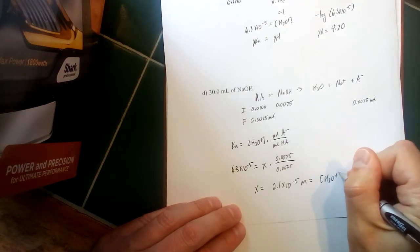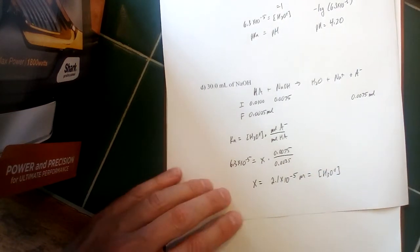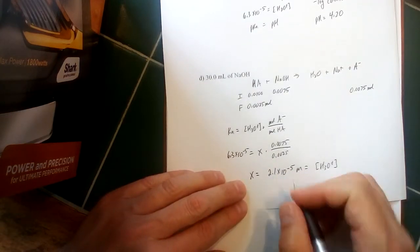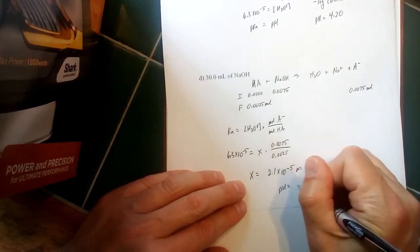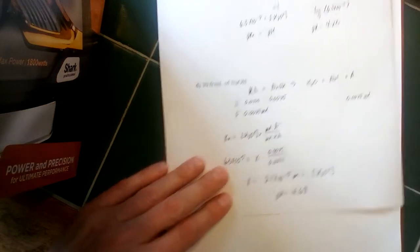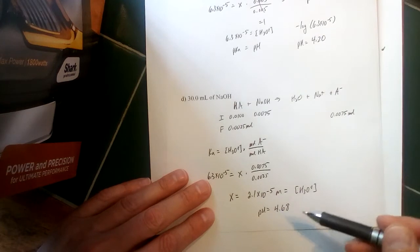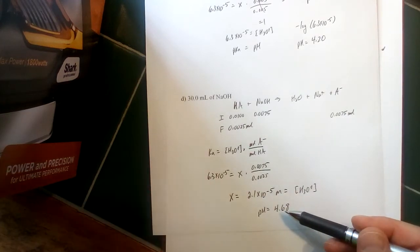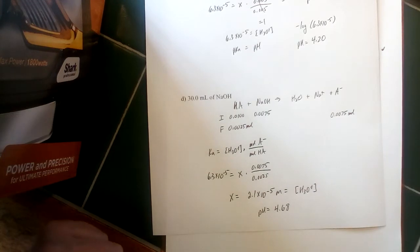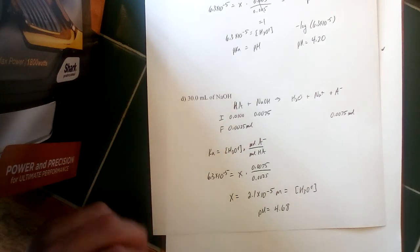So going down makes sense—we're adding base, the concentration of acid is going down. Take the negative log of that, and our pH bumps up again a little bit to 4.68. So it was 4.20, bumps up to 4.68—it's going in the right direction, going in small increments, which makes sense for a titration in the range where we have a buffer system.